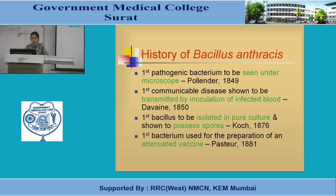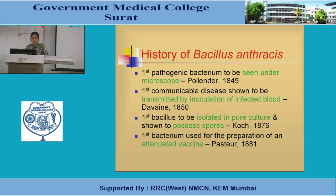Regarding the history of Bacillus anthracis: this bacterium is the first pathogenic bacterium to be seen under the microscope, observed by scientist Hollander. It was the first communicable disease shown to be transmitted by inoculation of infected blood, discovered by Davaine. Koch demonstrated it as the first bacillus isolated in pure culture showing spores. Pasteur discovered the first attenuated vaccine prepared using this bacterium.